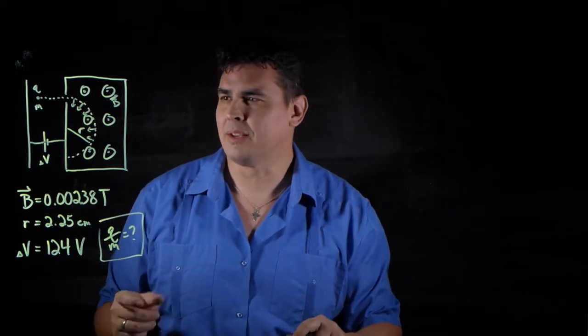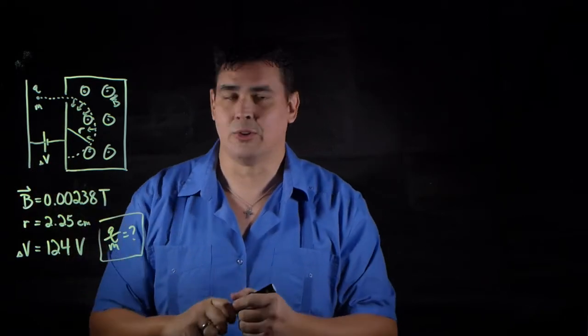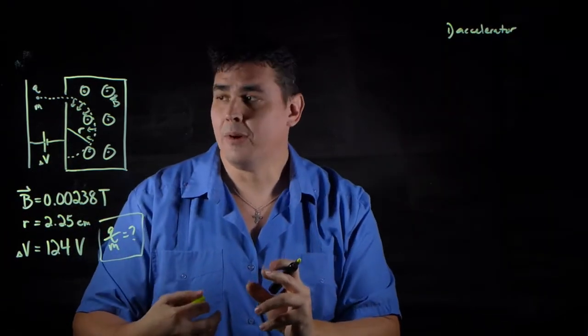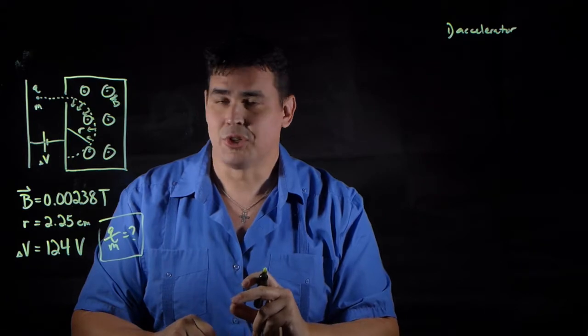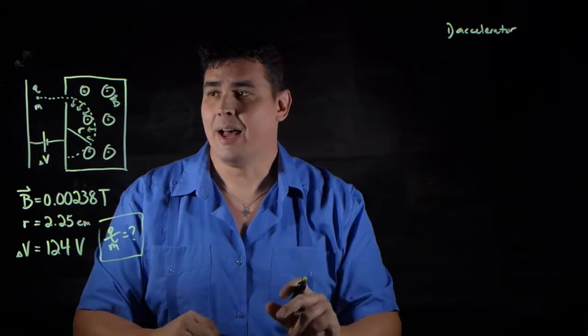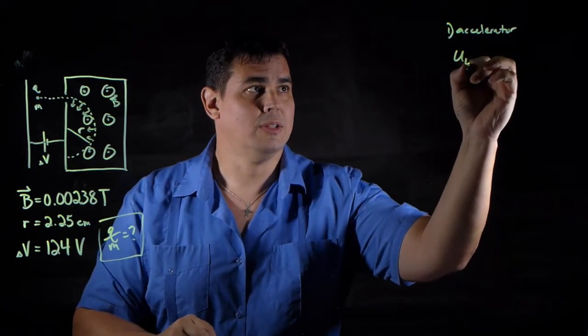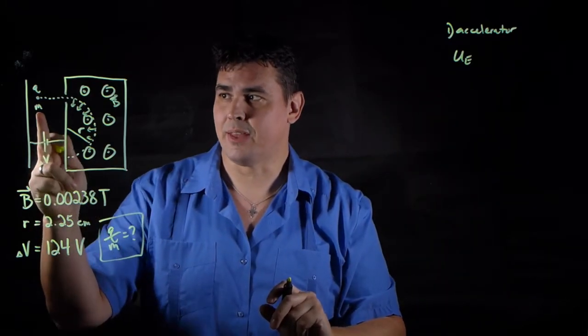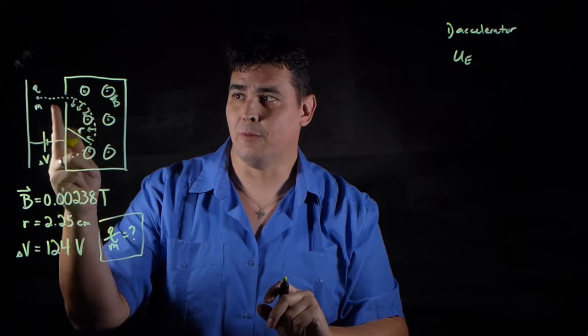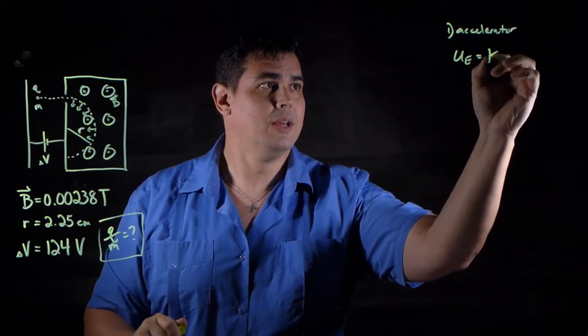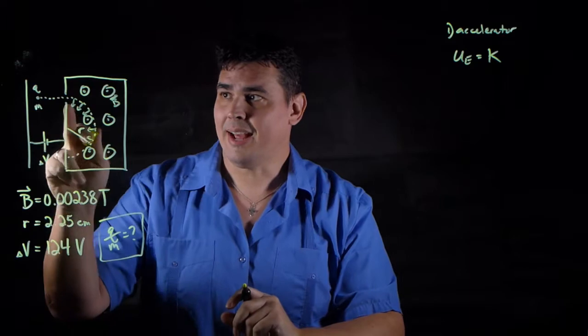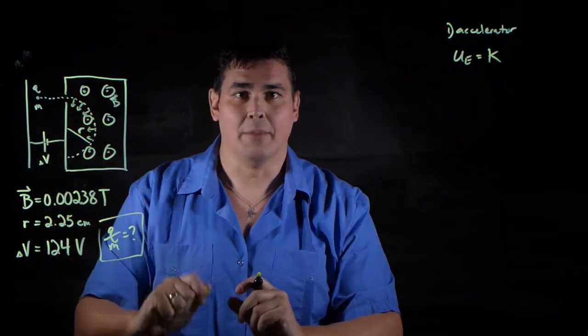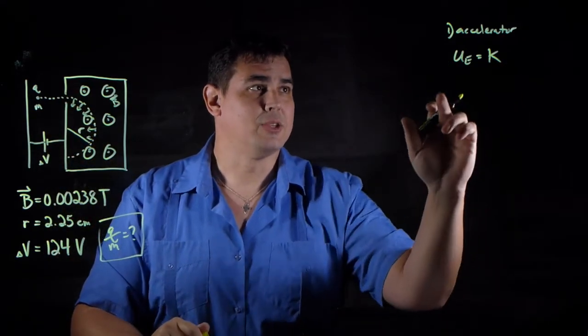There are three different parts to a mass spectrometer problem, but they're all following the same thing. The first part is the accelerator. In an accelerator, it's just conservation of energy. The electrical potential energy caused by this potential difference that makes this charge speed up from rest is equal to the kinetic energy that it has when it gets injected.